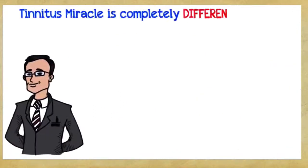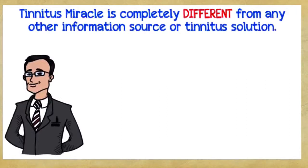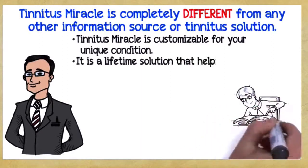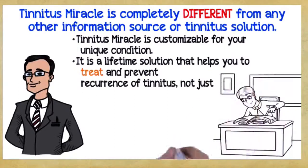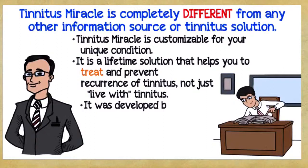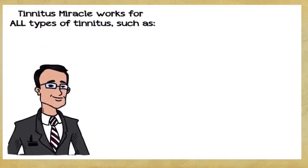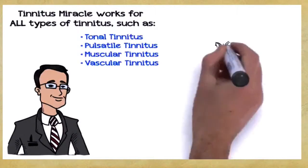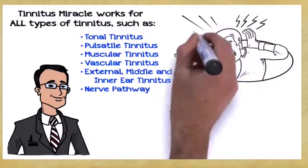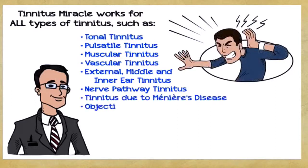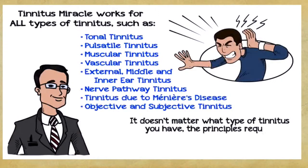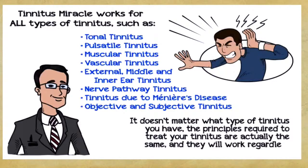Tinnitus Miracle is completely different from any other information source or tinnitus solution. Here's why. Tinnitus Miracle is customizable for your unique condition. It's a lifetime solution that helps you treat and prevent recurrence of tinnitus, not just live with tinnitus. It was developed by a real tinnitus sufferer. It's an interactive program that shows you exactly how to overcome tinnitus. Tinnitus Miracle works for all types of tinnitus, such as tonal tinnitus, pulsatile tinnitus, muscular tinnitus, vascular tinnitus, external, middle, and inner ear tinnitus, nerve pathway tinnitus, tinnitus due to Meniere's disease, objective and subjective tinnitus. It doesn't matter what type of tinnitus you have, the principles required to treat your tinnitus are actually the same, and they will work regardless of your age or background.